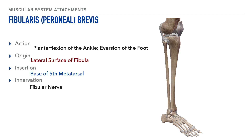The next muscle is called the fibularis brevis — 'brevis' means short, so associating 'brief' with short can help you remember it. The action of this muscle is plantar flexion of the ankle along with eversion of the foot. Its origin is on the lower and lateral portions of the fibula, its insertion is on the base of the fifth metatarsal, and its innervation is from the fibular nerve.